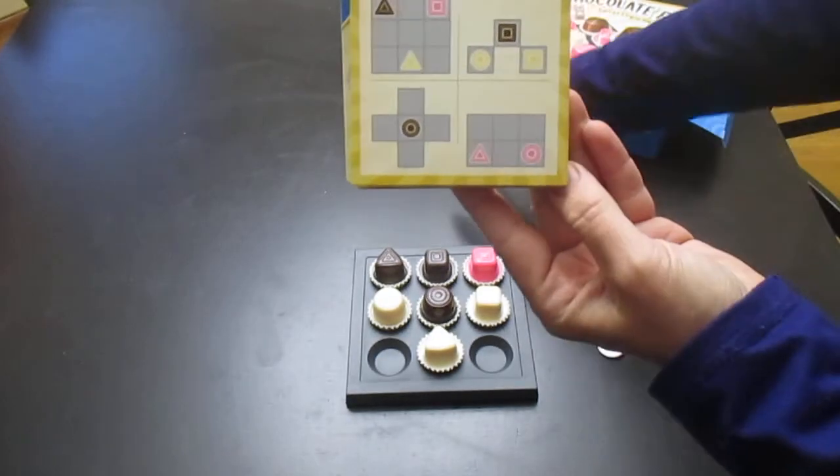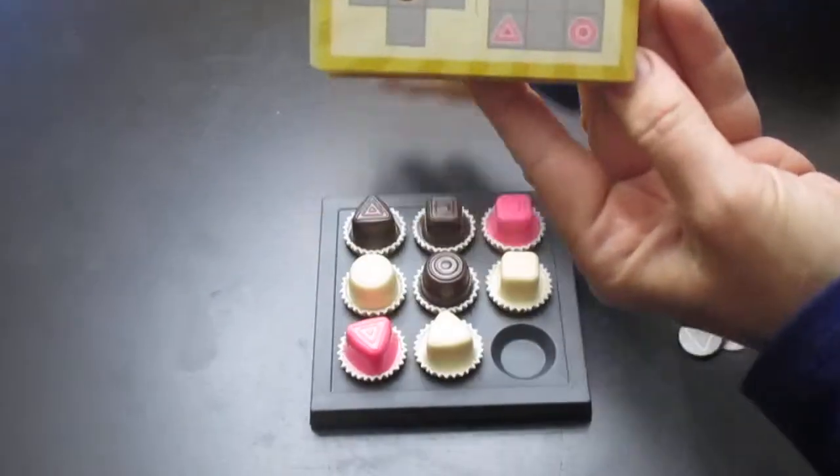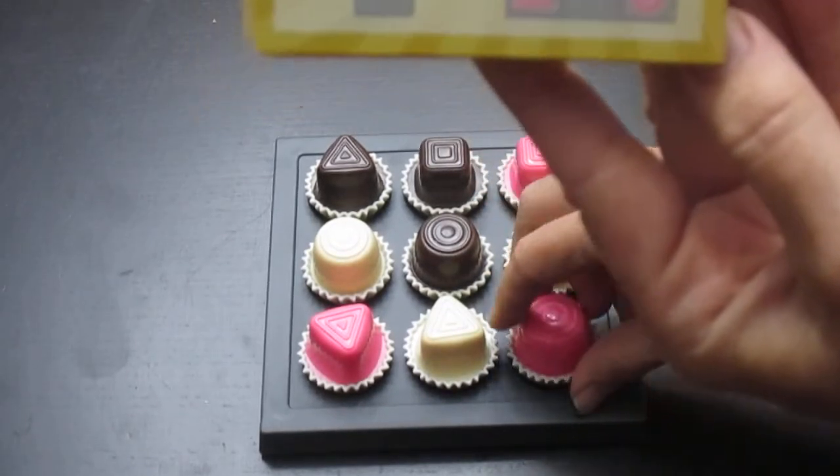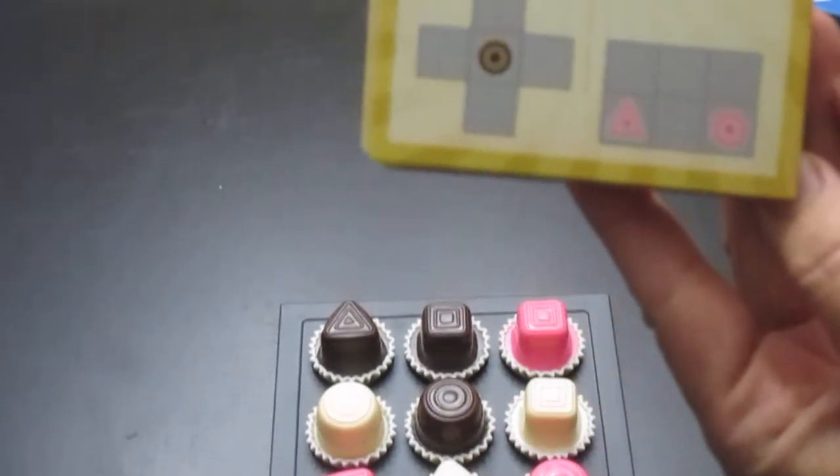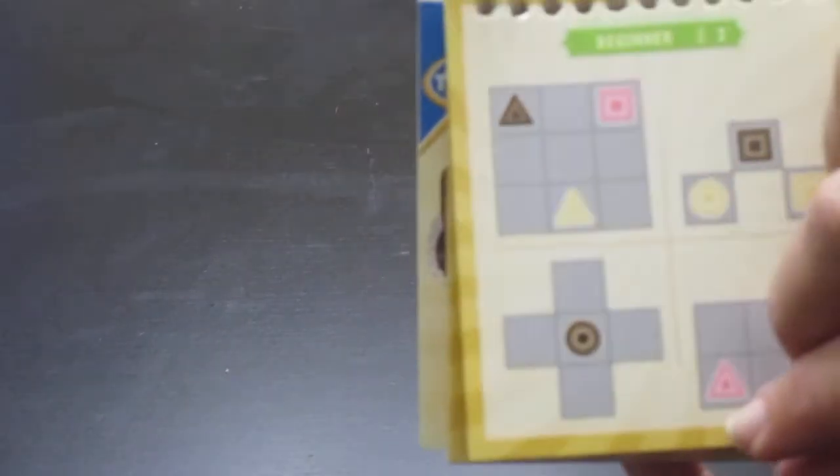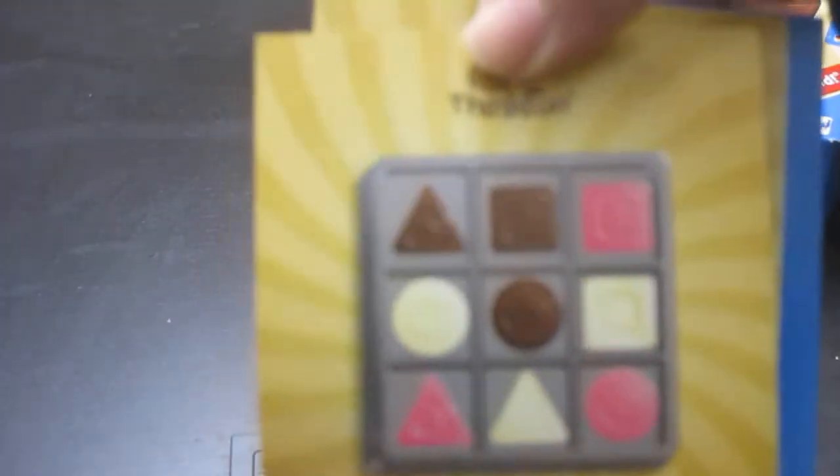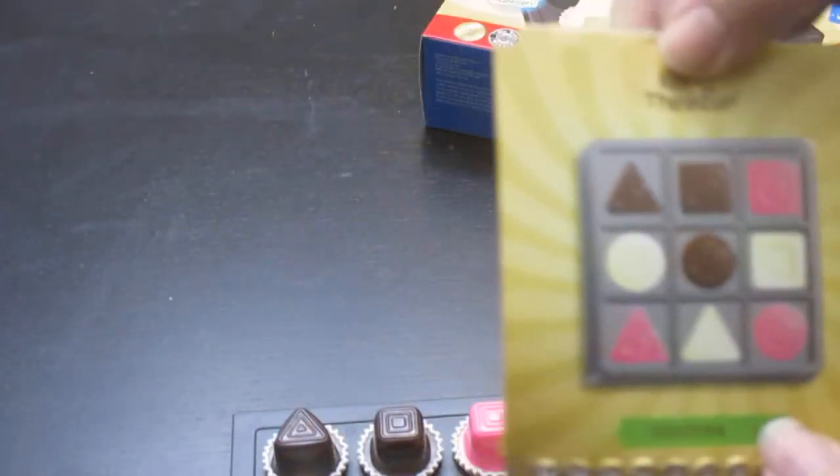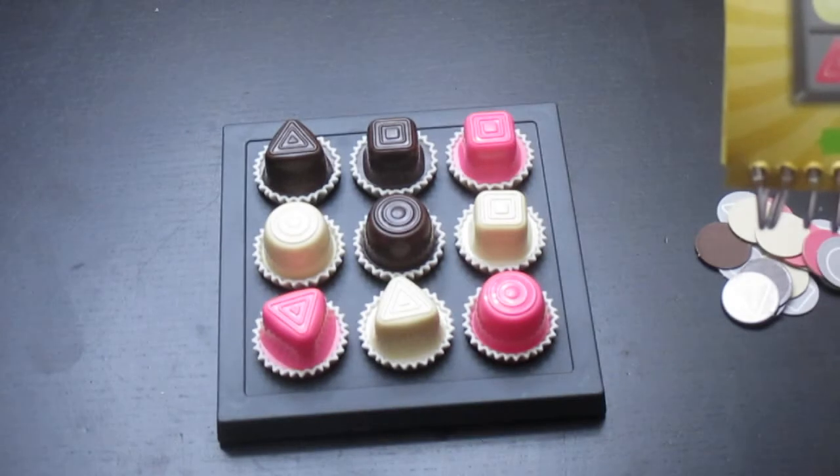My last is to place the pink triangle and then the pink circle. So I have all six pieces in my board. To confirm that I did it right, if you flip this over on the back side is the solution. And if you notice the solution and you look at the board, you will see that they match.